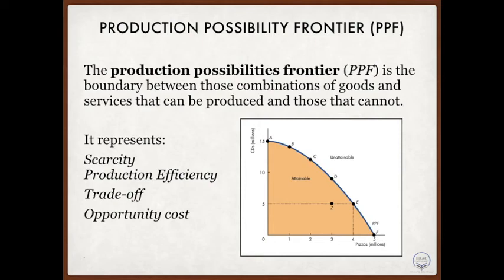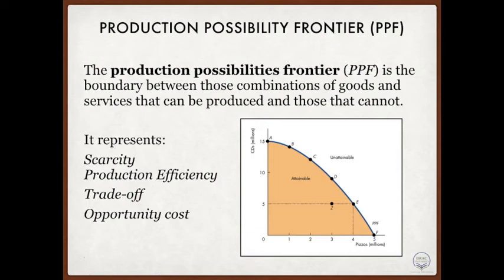First, let's start with scarcity. The PPF model illustrates scarcity because the country cannot attain anything outside the frontier, which is the blue line. We can produce at all points inside the PPF and on the PPF line — these are all attainable points. But anything outside the blue line, outside the PPF boundary, are unattainable points. This is because outside the PPF line the country does not have sufficient resources for any further production.